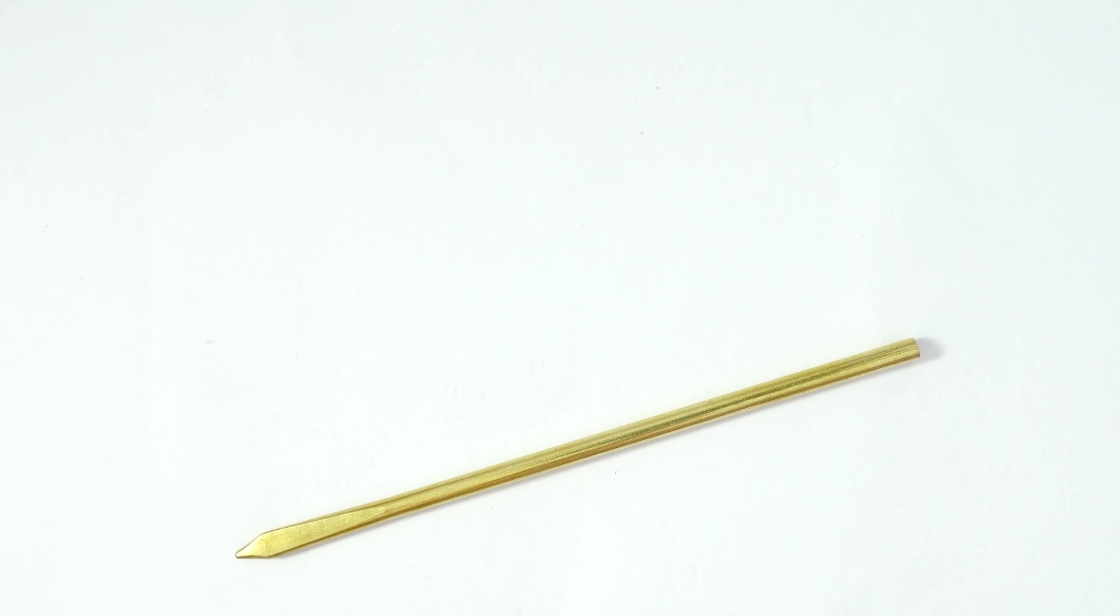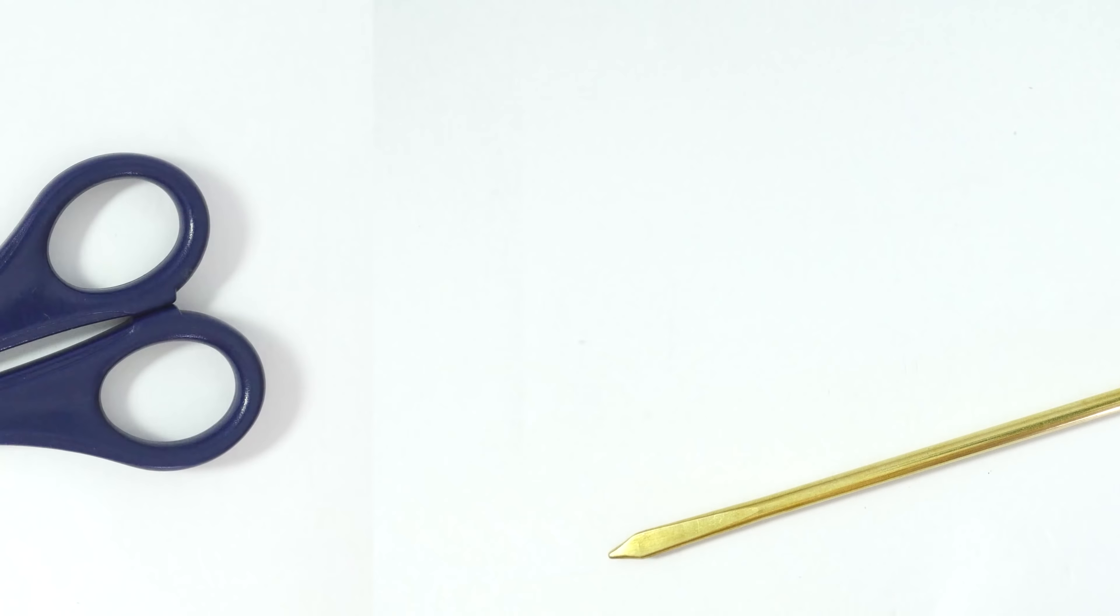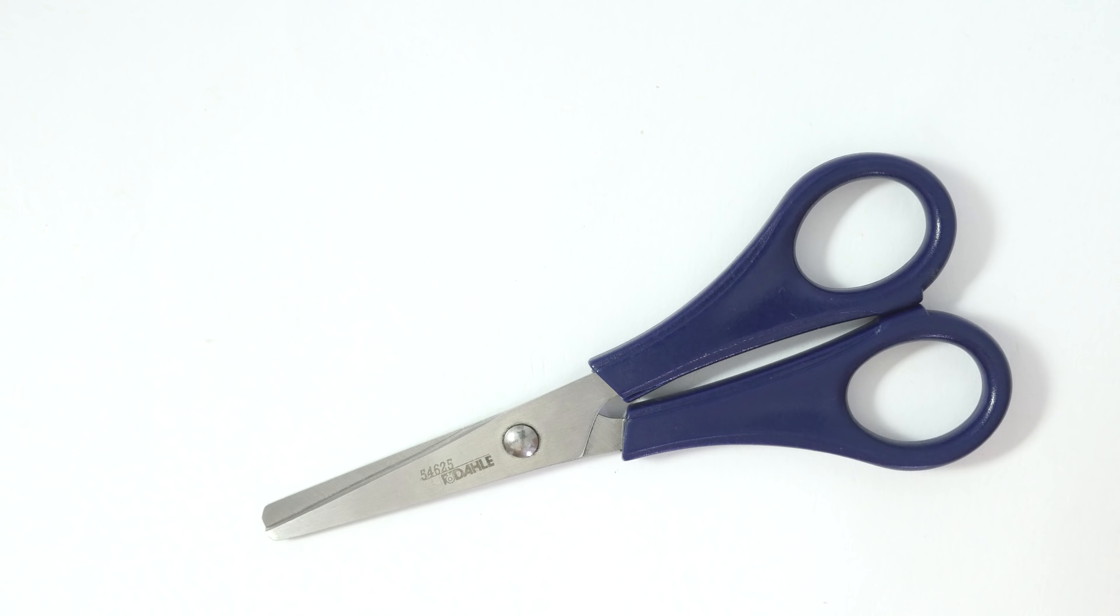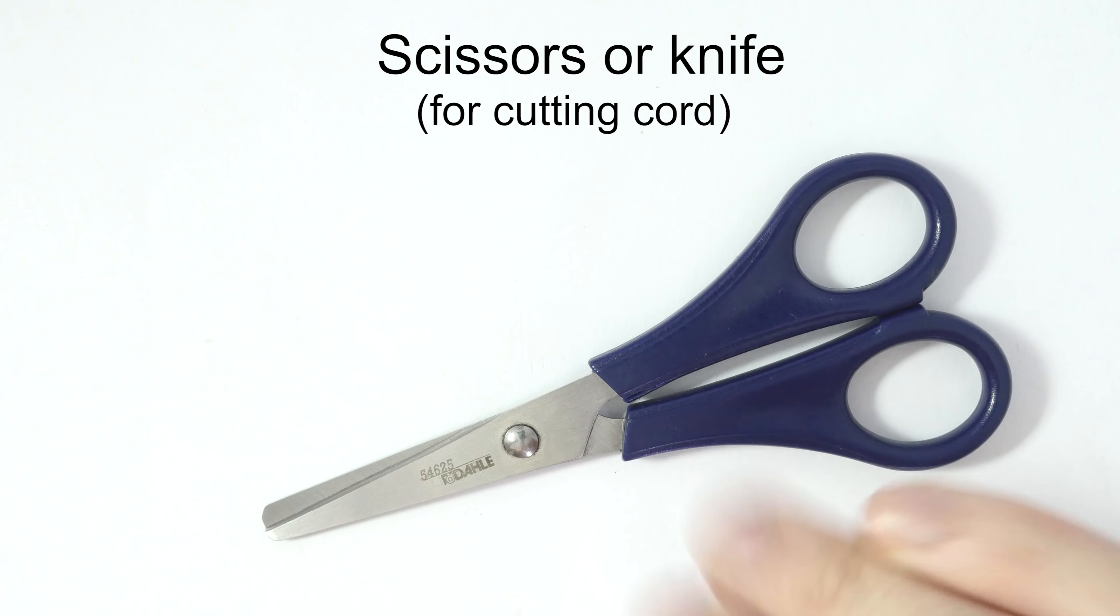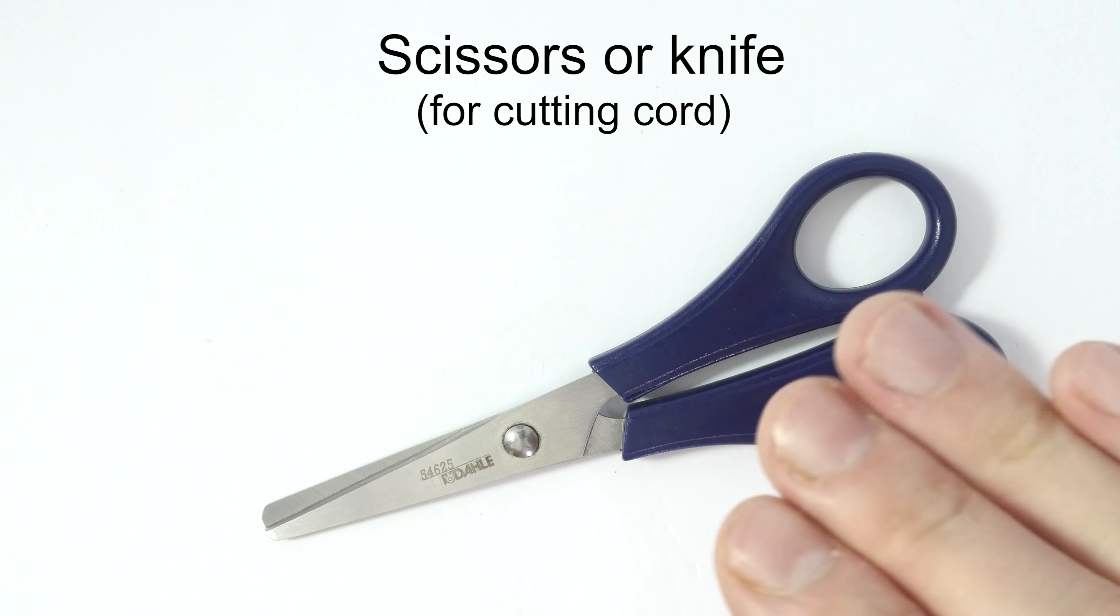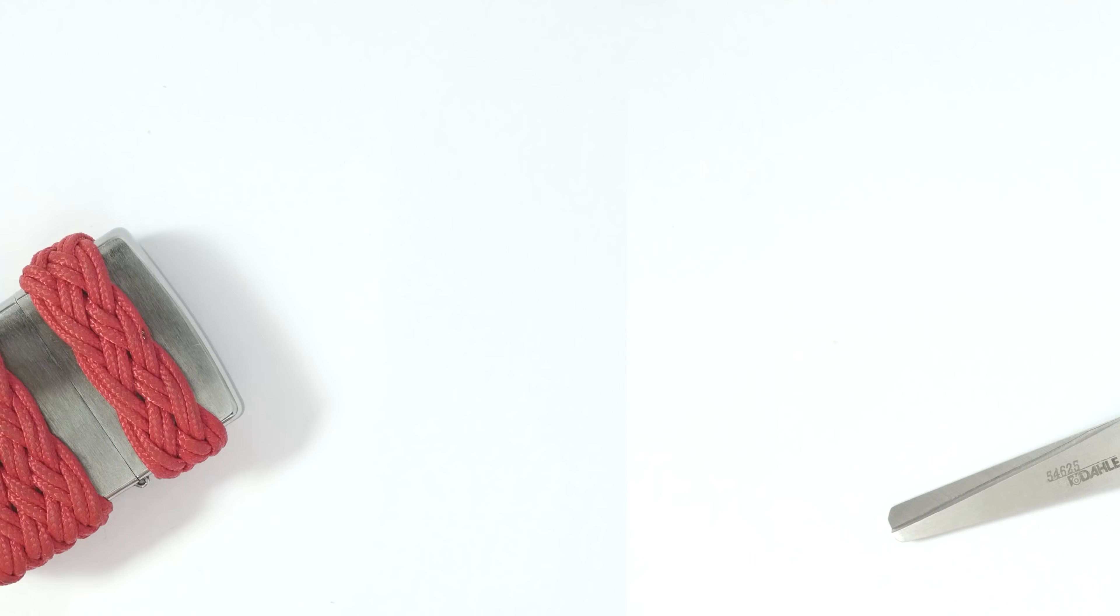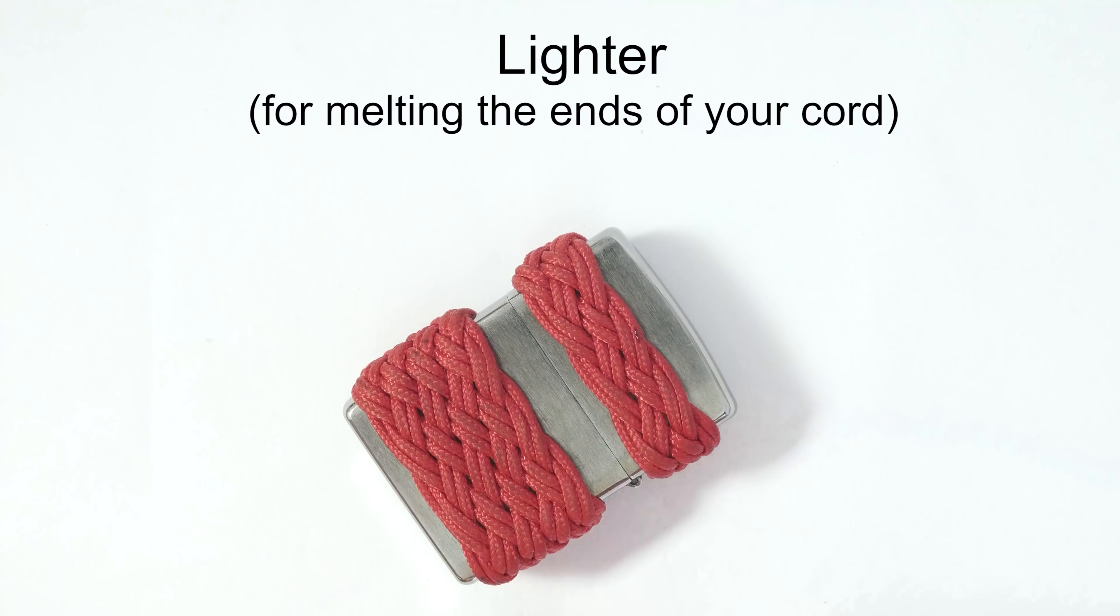If you have one, a lacing needle comes in handy when finishing the bracelet. You're also going to need a pair of scissors or a knife to cut your cord with. Finally, a lighter is used to melt the ends of your paracord. With these supplies ready, let's begin.